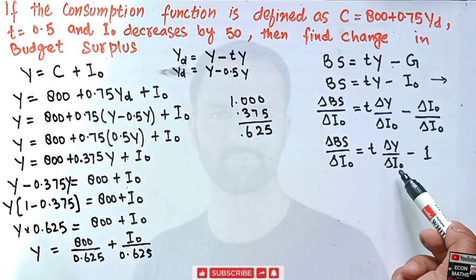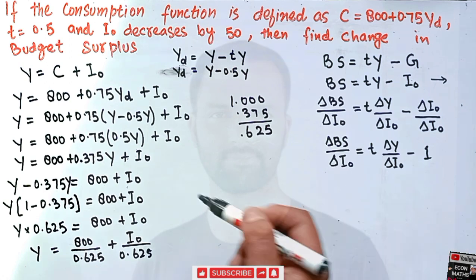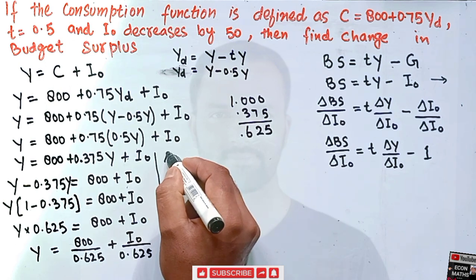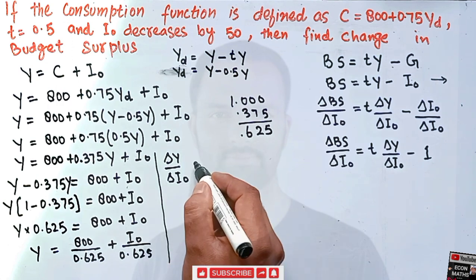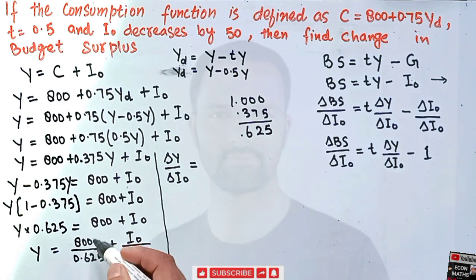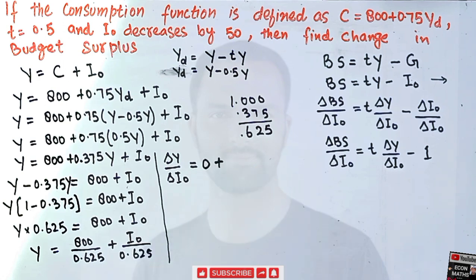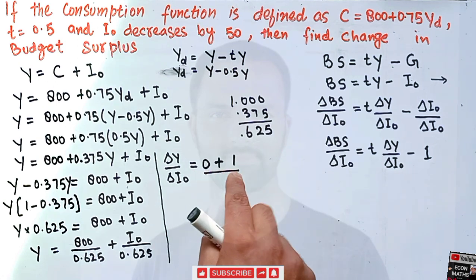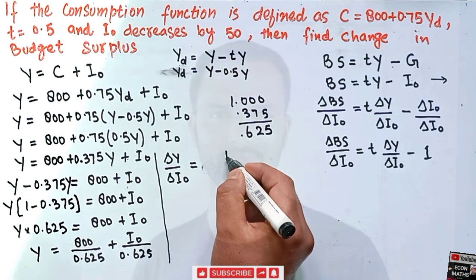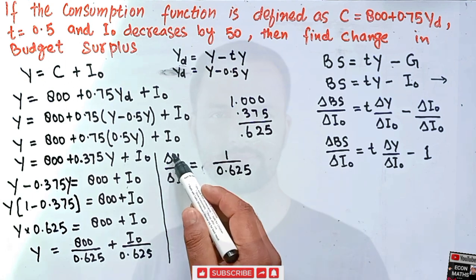Now we take the derivative dy/dI₀. Differentiating Y = 800/0.625 + I₀/0.625 with respect to I₀: the first term is a constant so its derivative is zero, and the derivative of I₀/0.625 is simply 1/0.625. Therefore dy/dI₀ = 1/0.625, which is our multiplier.